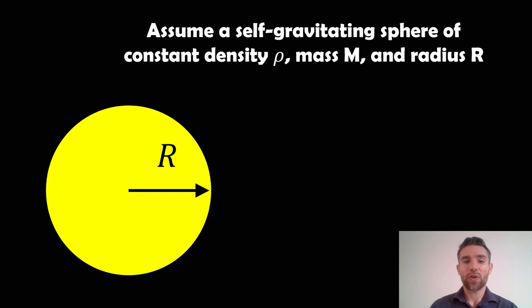The first thing is to assume we've got a self-gravitating sphere of constant density. So the density throughout is the same, it doesn't change, which is important. It's got some mass M and radius R.